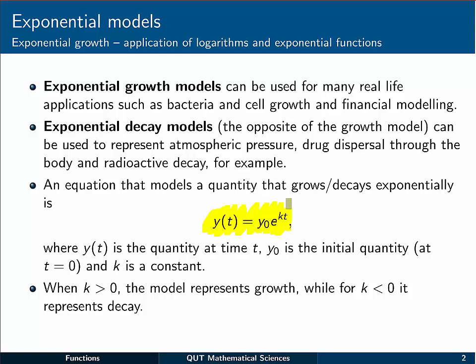Here y(t) is the quantity that we're interested in and its value at time t. y₀ is the initial quantity, in other words y at zero, and k is some constant that tells us how quickly or slowly the growth or decay occurs.